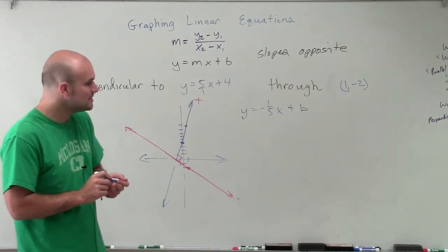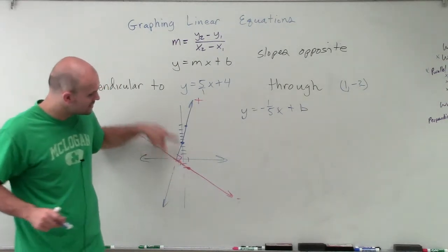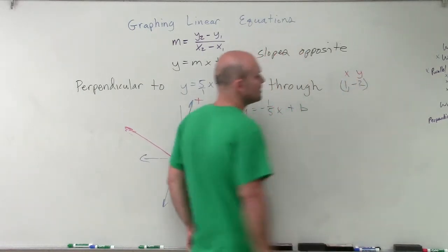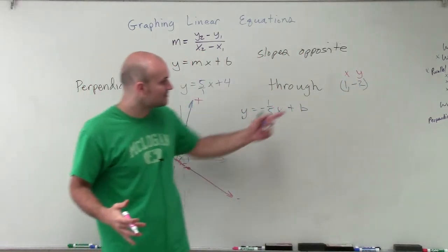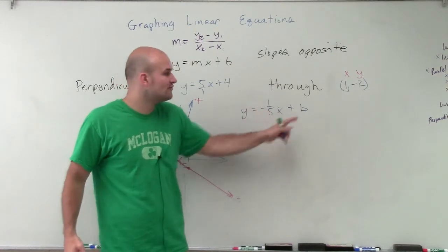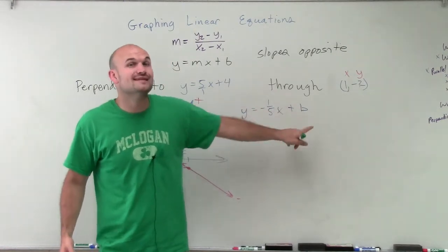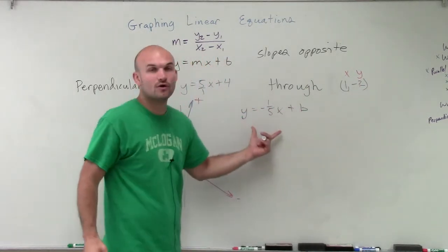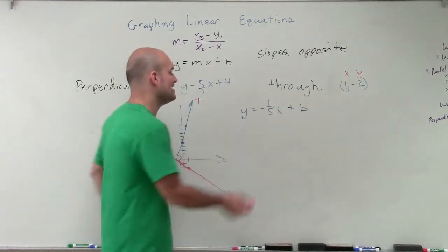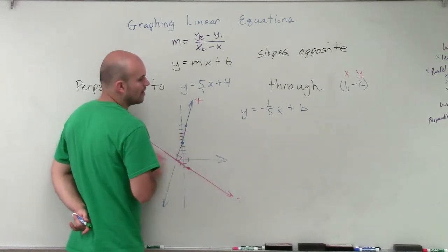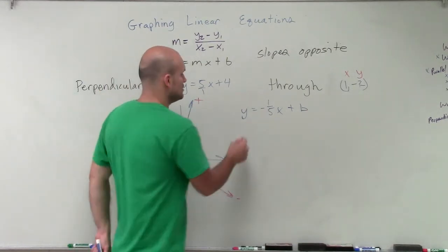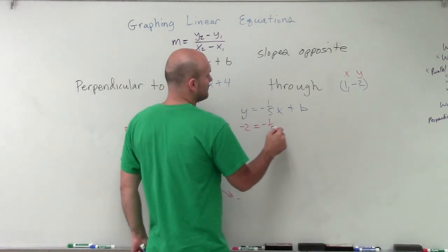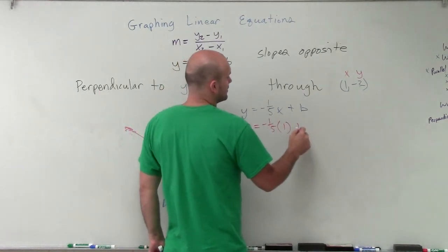So again, to do that, since we know that my equation goes through this point, and this point has an x and a y coordinate, we know that this point is going to make this equation true for the right value of b. We just need to figure it out. So to do that, we're going to plug in our point, x and y, in for our x and y coordinates of our new equation with our new slope of our perpendicular line. So I'll just plug in negative 2 equals a negative 1 fifth times 1 plus b.